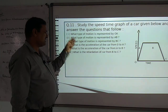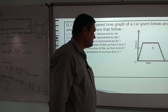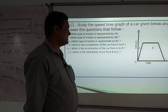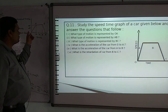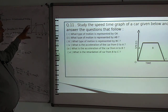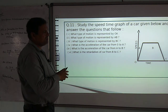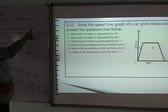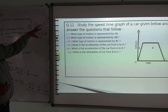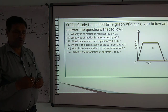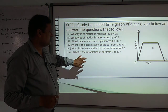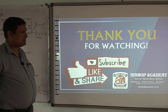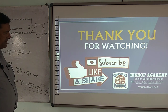If an additional question asks for the total distance covered by the car, we find the area under the graph. Since the figure cannot be solved as one shape, we split it into three parts: a triangle, a rectangle, and a triangle, then add all three areas. The result gives the total distance. Thank you for watching this video; in the next video we will provide some notes of these numericals to write in your fair copy.